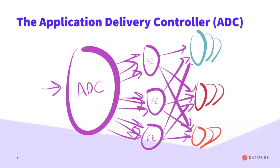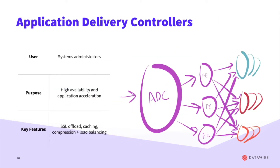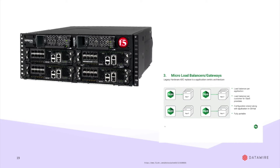This drove the rise of something called an application delivery controller, ADC. The primary target was still sysadmins, but it was all about acceleration at the application level — high availability, SSL/TLS offload, aggressive caching, compression, and load balancing. F5 and NGINX did a lot of work in this space with Big IP. F5 now owns NGINX, which is quite interesting. These were the two primary hardware and software providers I encountered most in my work in London.